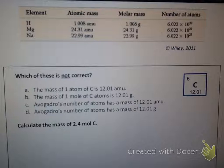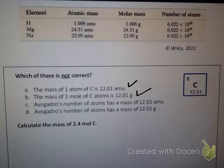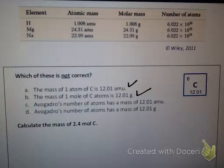Answer B says the mass of one mole of carbon atoms is 12.01 grams. Is that correct? It is — one mole of anything gives you a molar mass, and molar mass is always measured in grams, so that's correct. Answer C says Avogadro's number of atoms has a mass of 12.01 amu. What is Avogadro's number? It's a mole. If you have a mole of atoms, would you use amu? No — this answer is not correct. You should use grams for a mole. Answer D is the correct version of that statement. When you have a mole you use grams; when you have an atom you use amu.